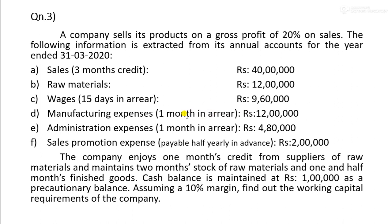Administration expenses outstanding for one month: 4,80,000. For one year, one month is outstanding. Outstanding administration expenses are a current liability. Sales promotion expenses are payable half-yearly in advance.